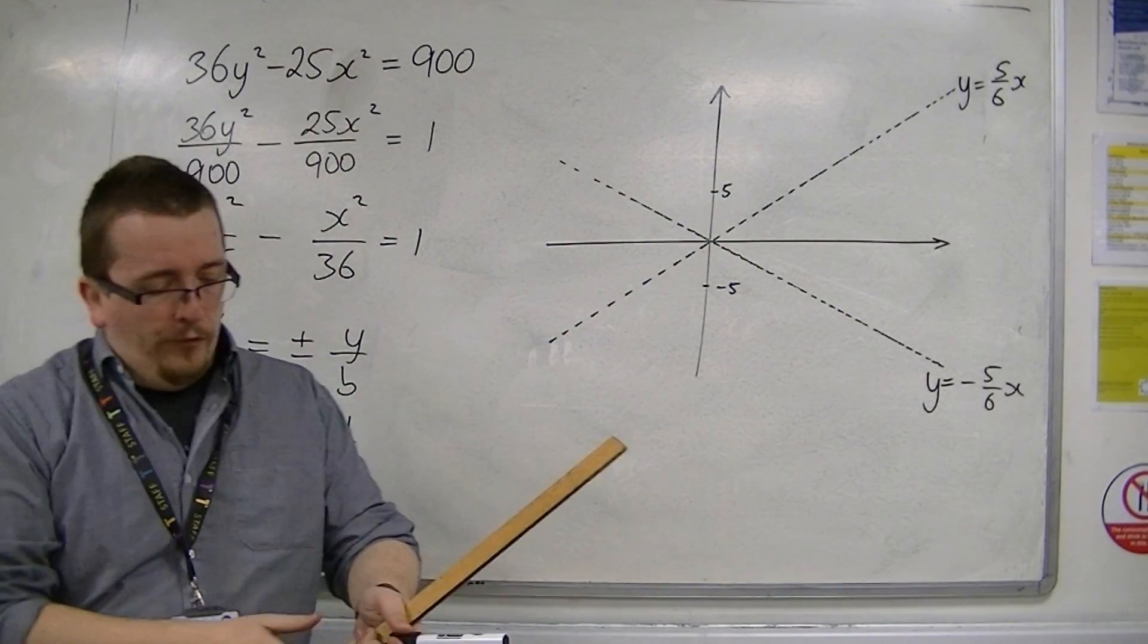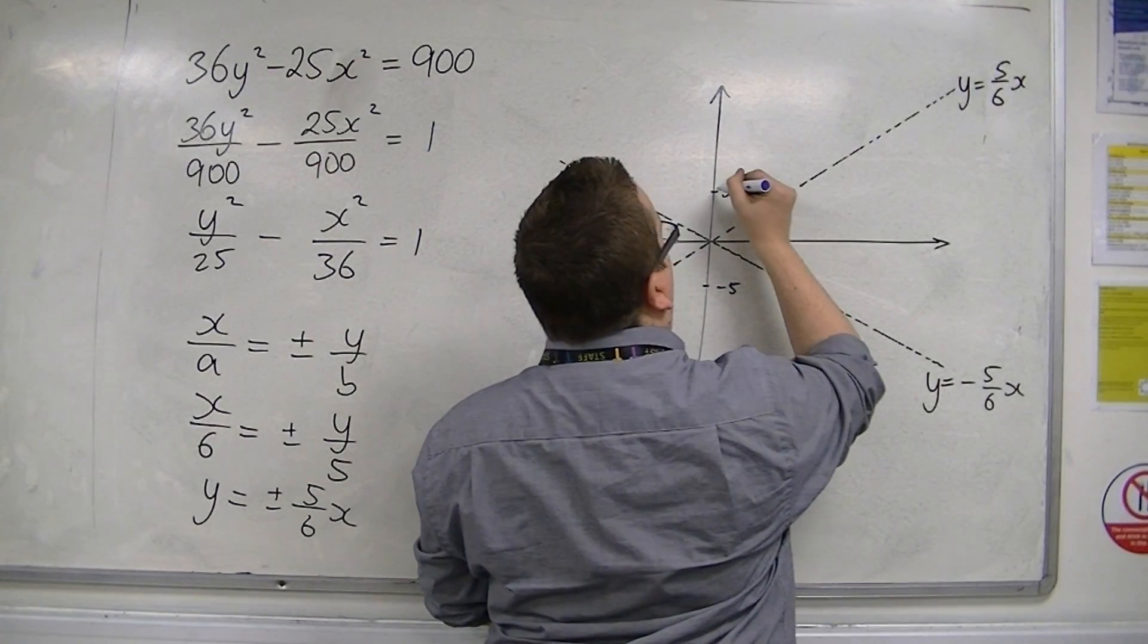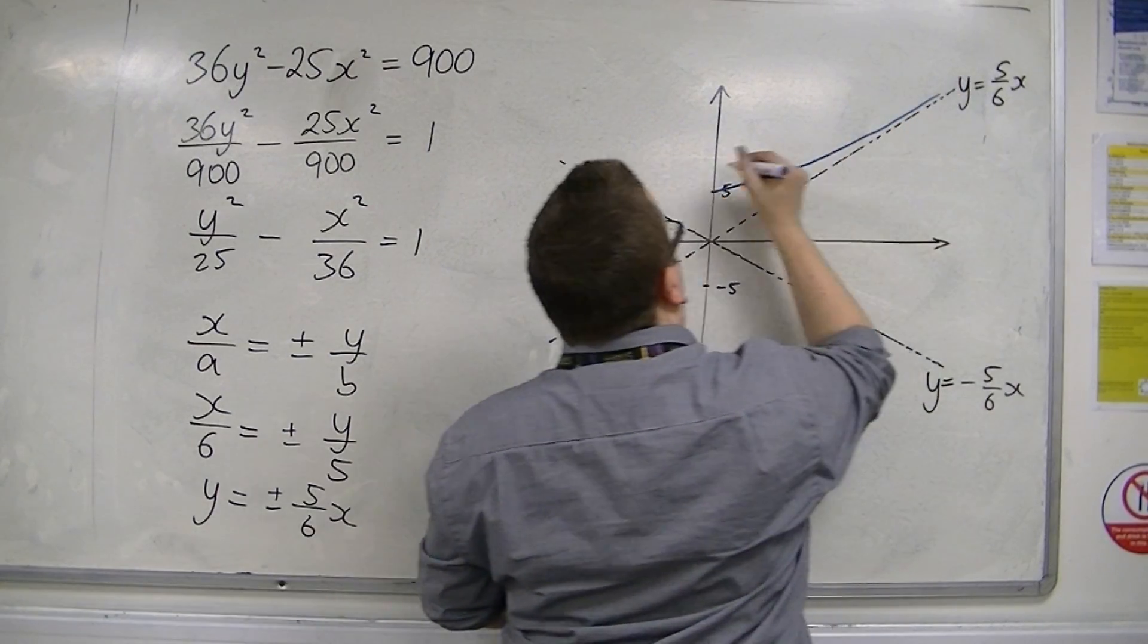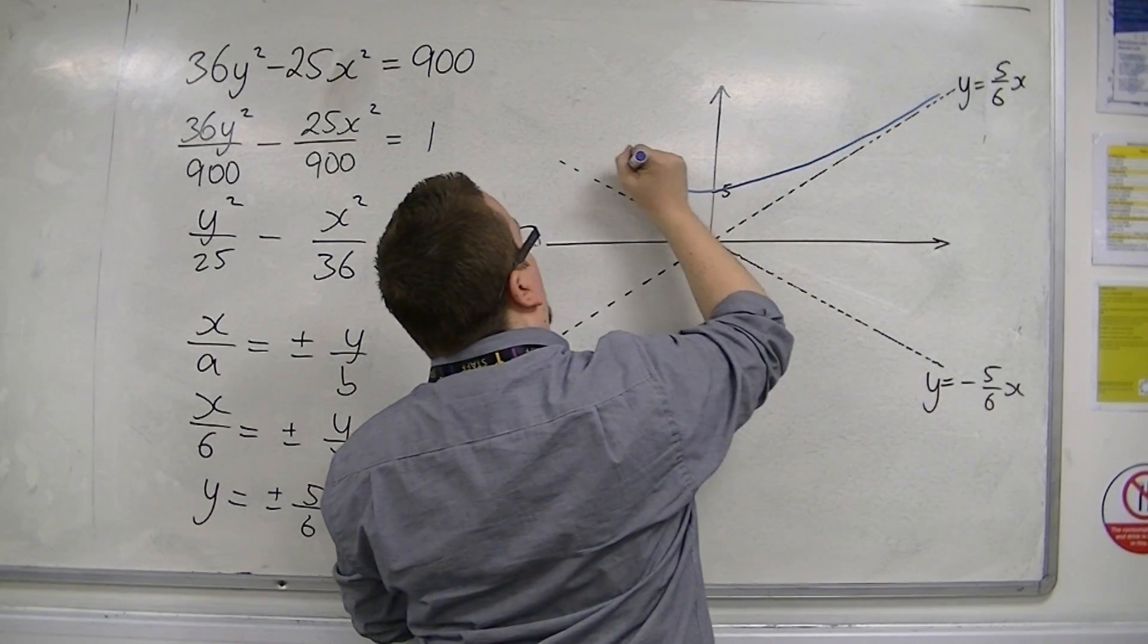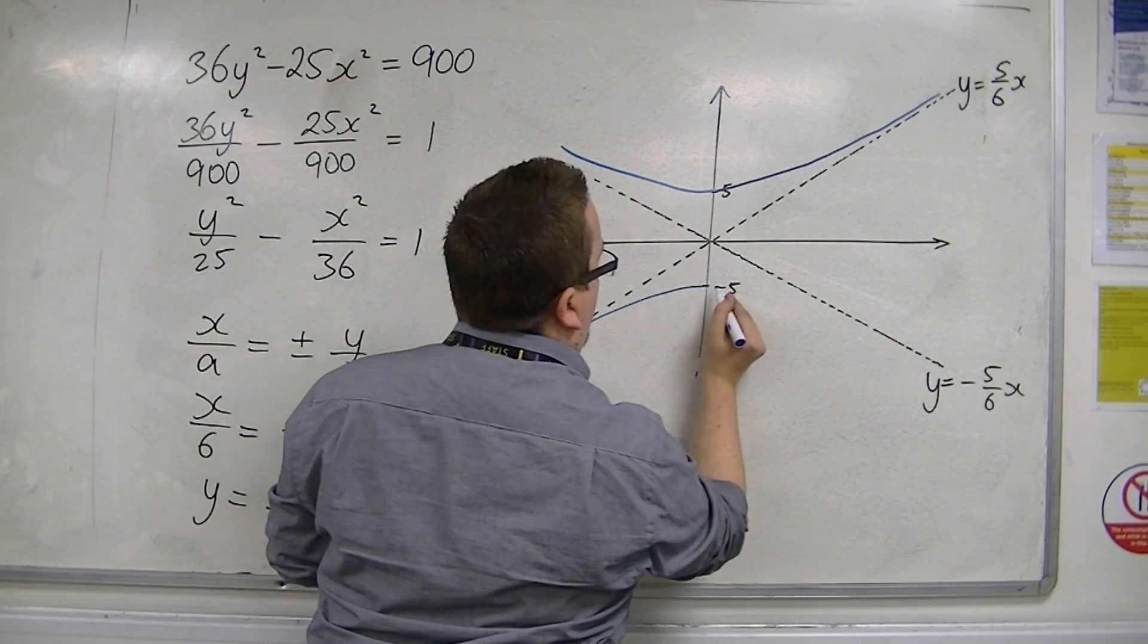So draw the asymptotes first. Much easier then to just draw in the curves. The curve will go something like that, down here, something like that.